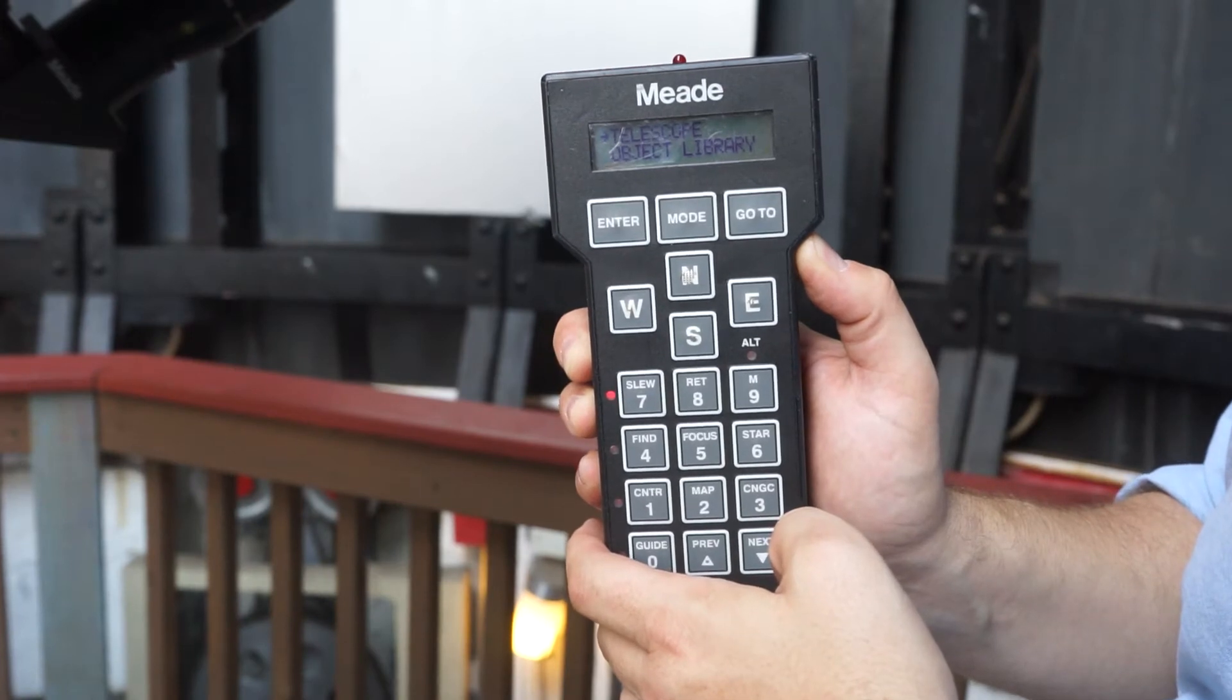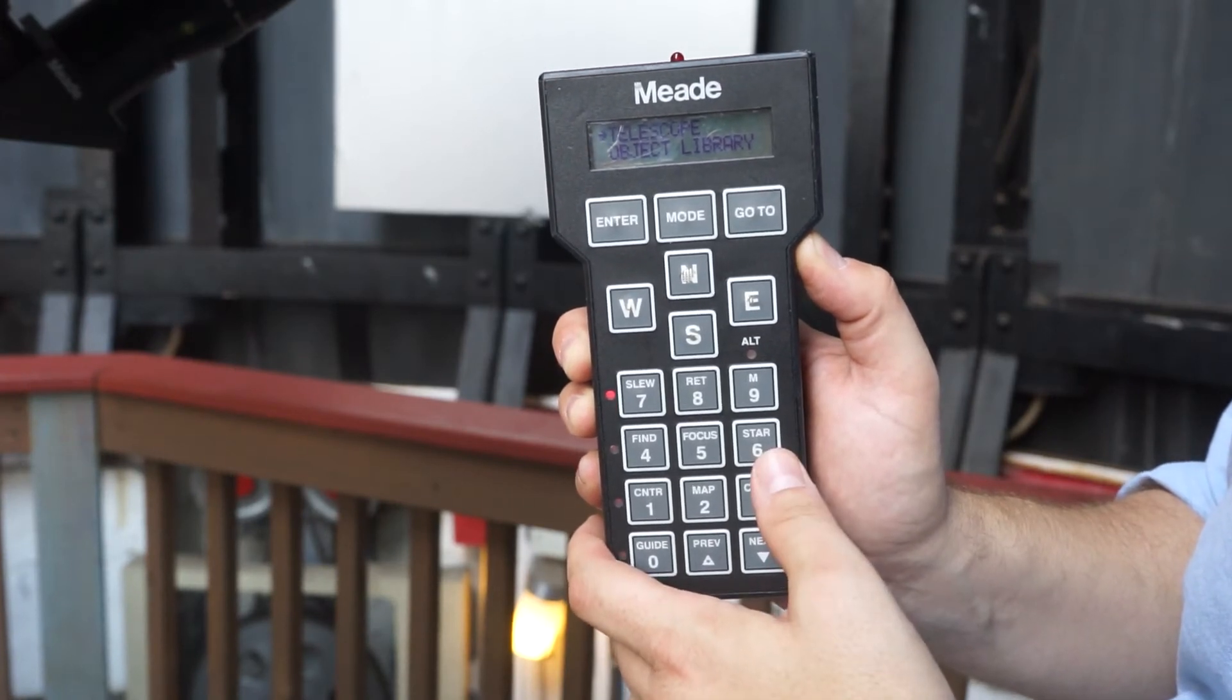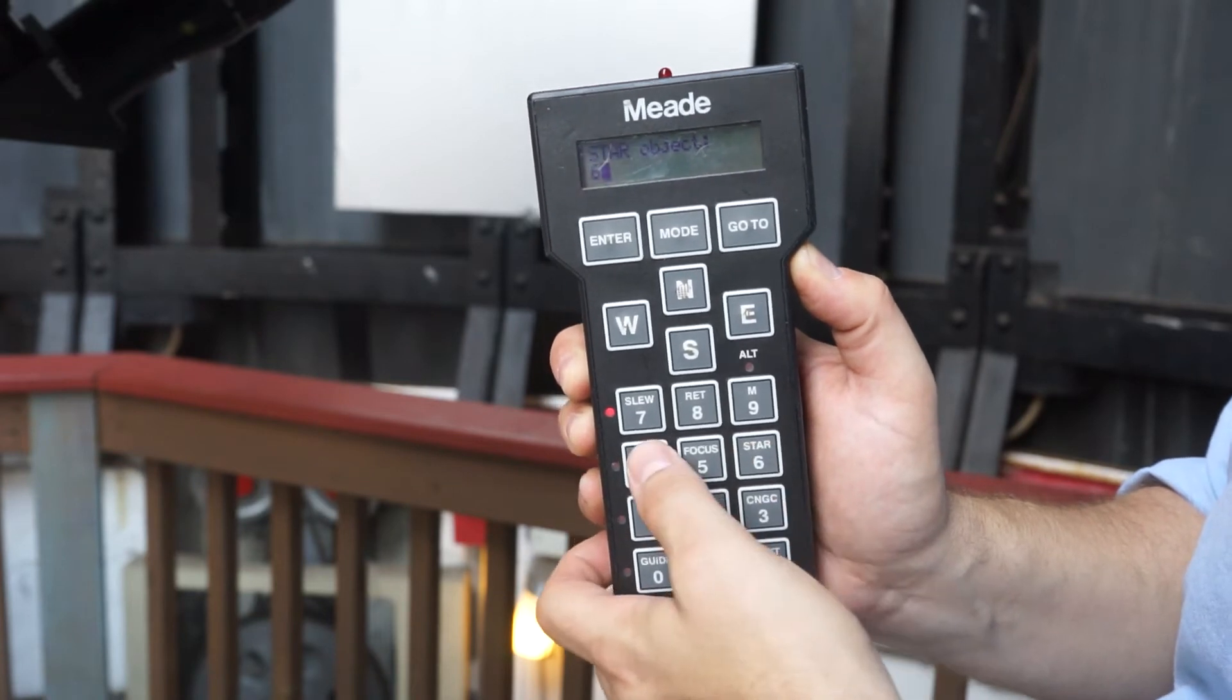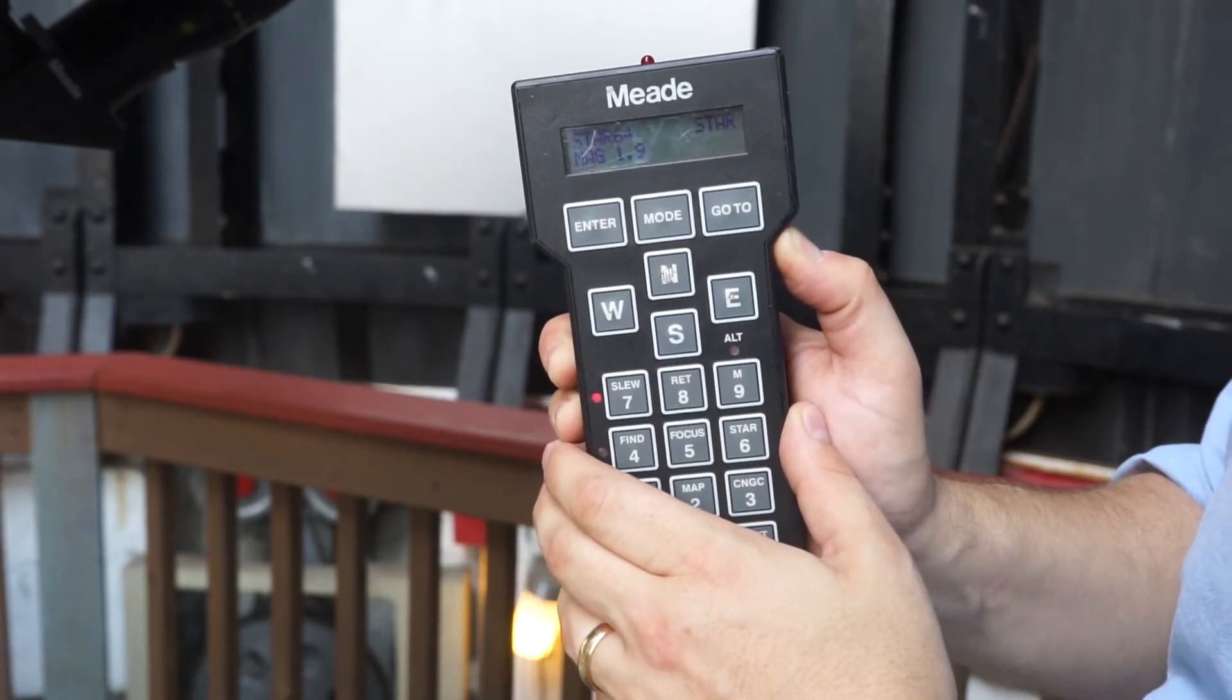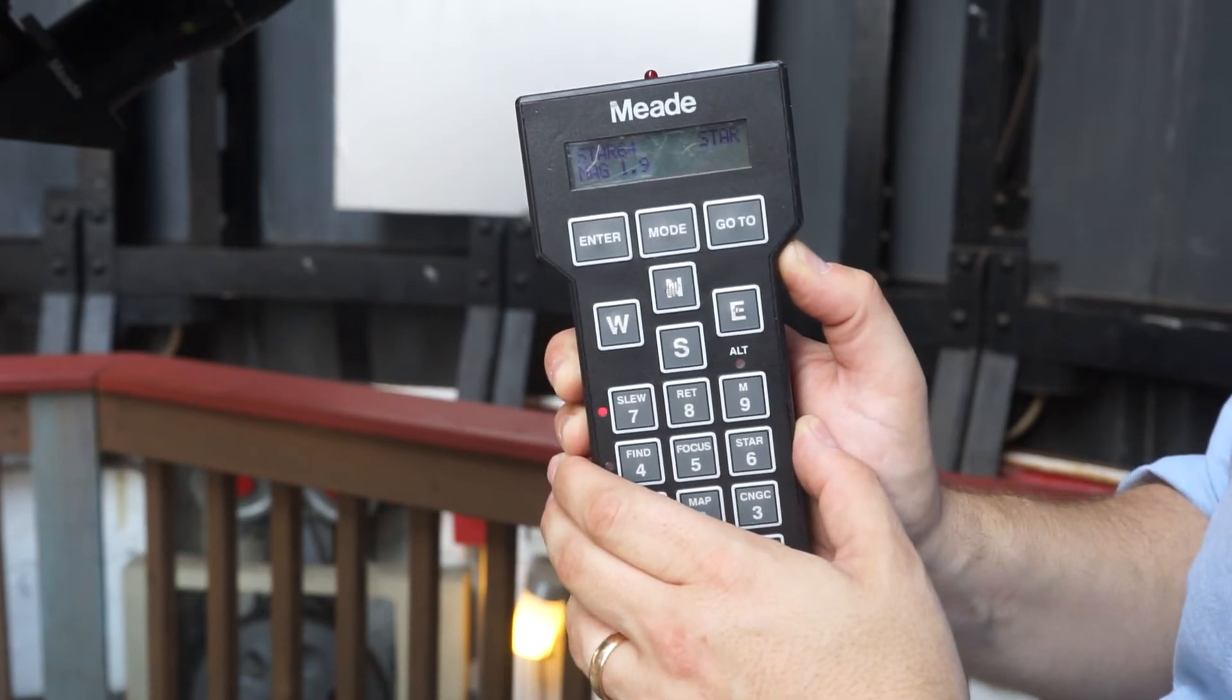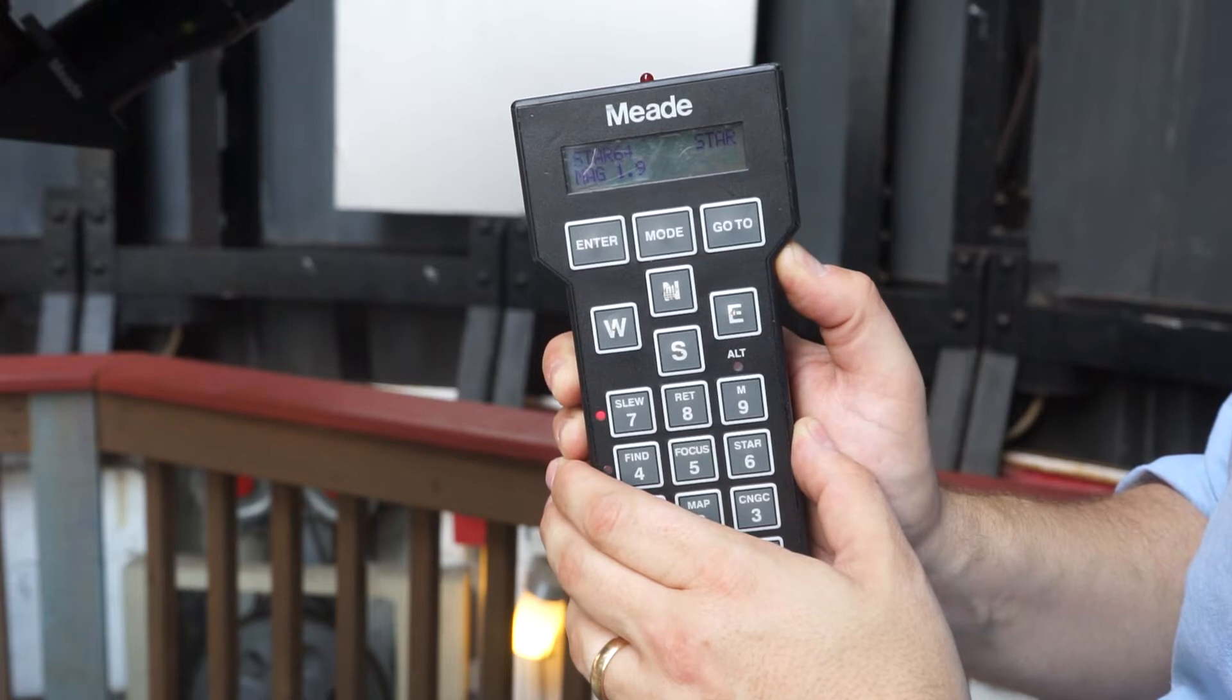Once you've chosen a star, bring up its coordinates on the handbox by pressing star, followed by its ID number from the library sheet. Do not press go to. The telescope doesn't know where it's pointing yet, so any attempt to automatically point it will fail completely.